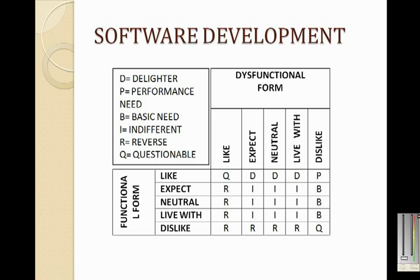As a quick way of prioritizing user requirements, you can use this lookup table to categorize requirements. Coming back to our earlier example of creating PDF files from Microsoft Word: if the user selects 'like' for the functional question and 'neutral' for the dysfunctional question, it would be classified as a delighter feature.